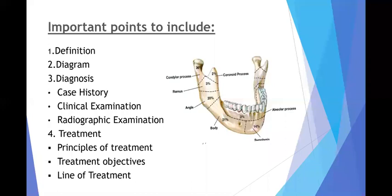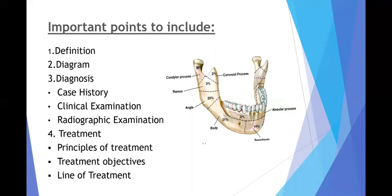These are the points we have to include in the answer. First is definition, then a diagram. In diagnosis, we tend to forget to mention the case history, which is very important in any case related to trauma. So never forget to mention the case history, the clinical examination, and radiographic examination. Then we go for the treatment, which includes principles of treatment, treatment objectives, and the basic line of treatment.